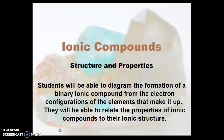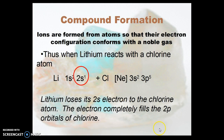This is a discussion of ionic compounds, their structure and properties. We want to diagram the formation of a binary ionic compound from the electron configurations, and relate the properties of ionic compounds, especially their high melting point, to their ionic structure. Ions are formed from atoms so that their electron configuration conforms with the noble gas.